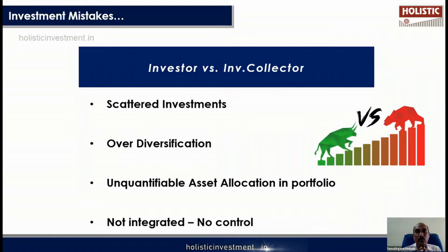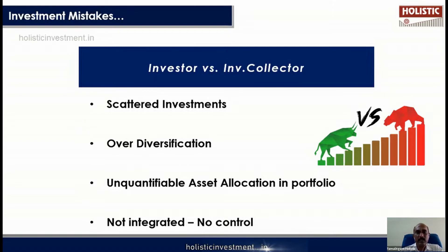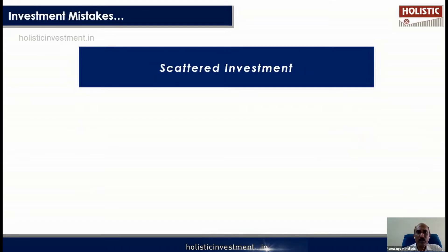To integrate all of this, you need a very clear process-based investment approach, not a product-based approach. As an investment collector, you focus on the product. An actual investor focuses on the process — creating goals, a financial roadmap, and a process around it. This can be done on your own or with the help of a financial planner. A scattered portfolio might look like: one PPF, four insurance investments, four fixed deposits, three ULIPs, two equity mutual fund SIPs, three bond investments, gold, and property. That is completely scattered, not integrated.